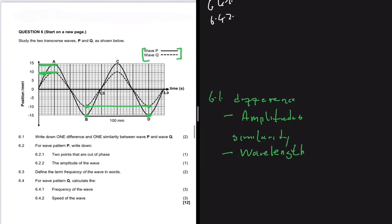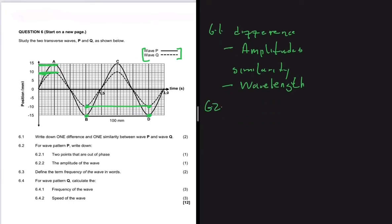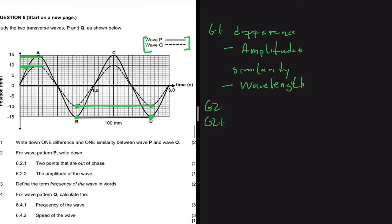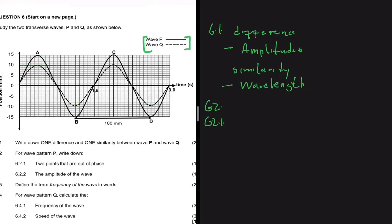Let's move to 6.2.1. For wave pattern P — the solid line — we need to identify two points that are out of phase. To understand this, let's define what out of phase means. Two points are out of phase if, first, they have the same displacement from equilibrium.